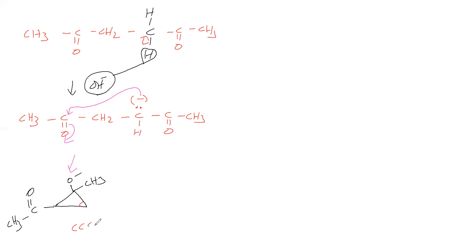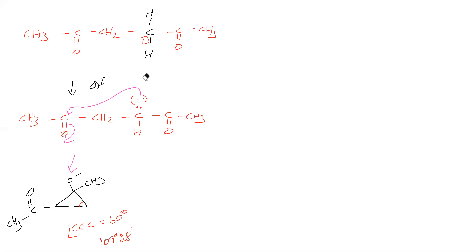In this three-membered ring, the CCC angle is 60 degrees. The normal tetrahedral bond angle is 109°28'. The deviation is very large, therefore the angle strain is highest. Since angle strain is highest, the three-membered ring has very less stability. Therefore we will go for another possibility.